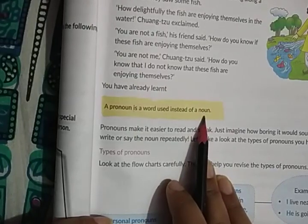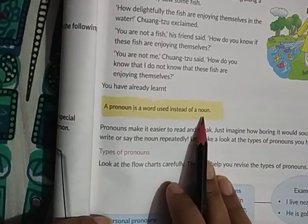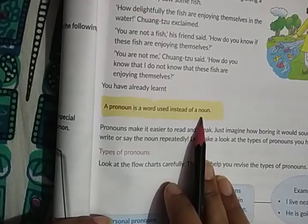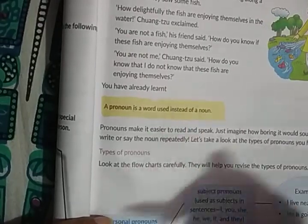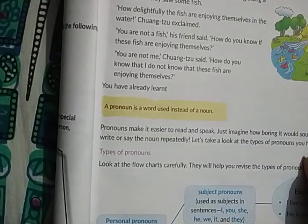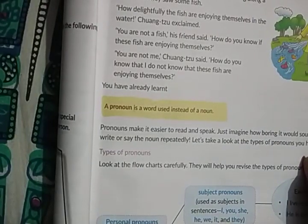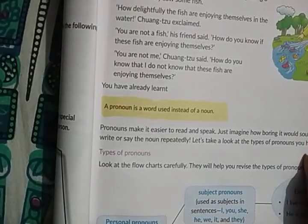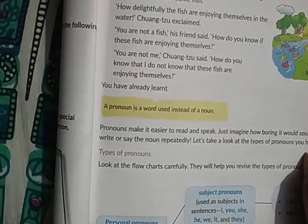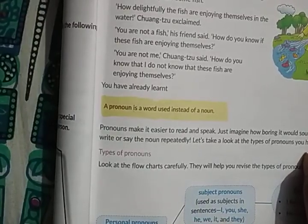For example: 'Ajay is ill so he is absent today.' Here, 'he' is used instead of 'Ajay.' Ajay is the noun and 'he' is the pronoun used instead of Ajay.